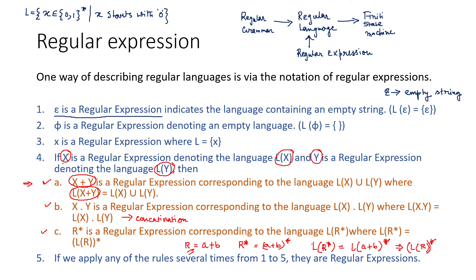So L(r*) should equal L(a + b)*, and since L(a + b) = L(r), we can say L(r*) = (L(r))*. This is exactly what is expressed in point (c). Applying these three operations — union, concatenation, and Kleene closure — in various combinations, we can build many more complex regular expressions in automata theory.